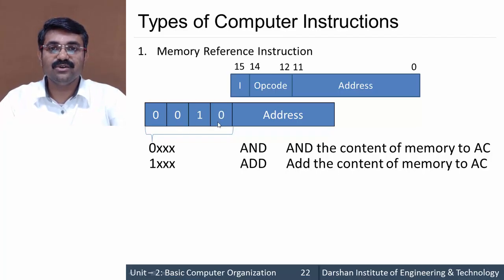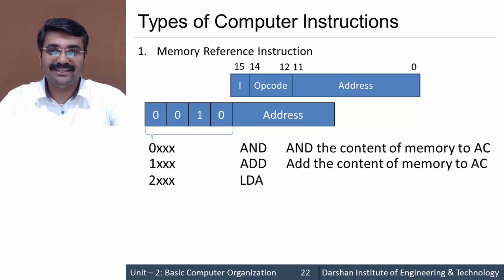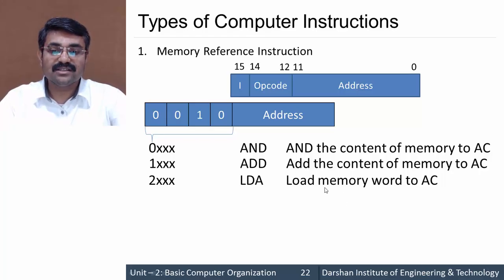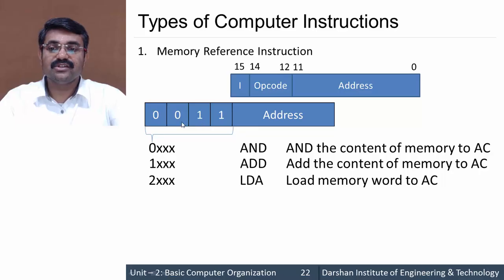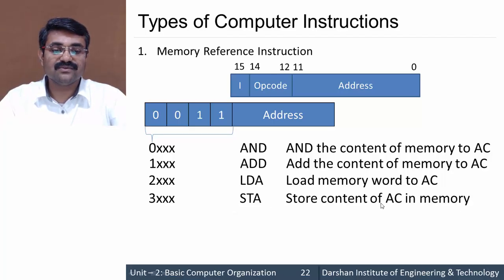Changing the opcode to 010, the hex code becomes 2xxx, designated as LDA — load the accumulator with a memory word. The operand is fetched from the specified address and stored into the accumulator. Next, opcode 011 gives hex code 3xxx, designated as STA — store the content of AC to memory, transferring the accumulator's content to the memory address specified.